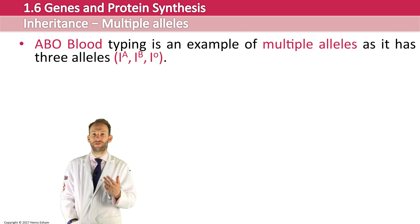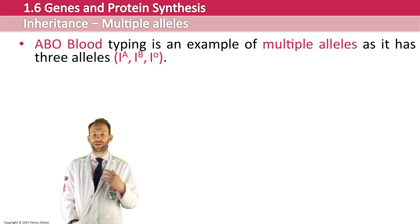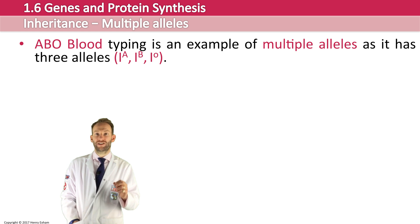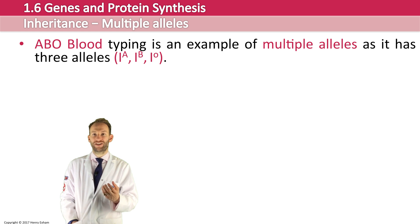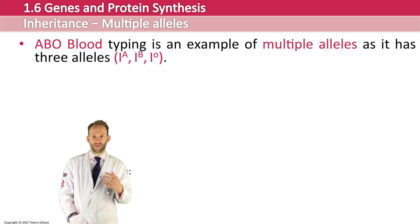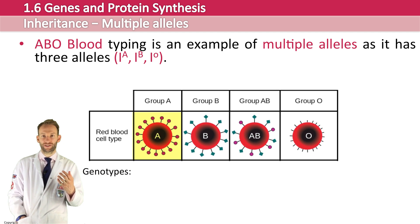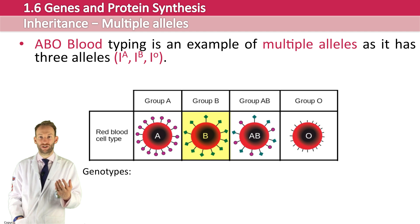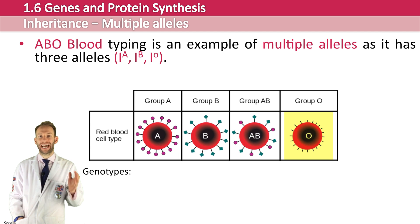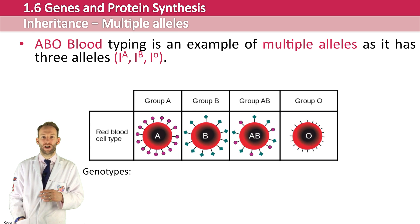The three alleles involved here are IA, IB, and IO. We're showing them in superscript because we've got three different alleles. Your blood type genes actually code for the particular antigens present on the surface of your red blood cells. So you could have type A antigens, type B antigens, both A and B antigens, or none at all. There are four different blood groups: A, B, AB, and O.